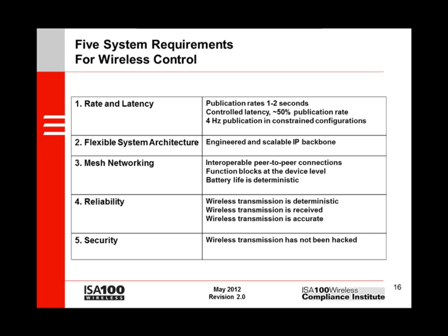The ISA-100 standard was designed to support reporting rates of four times per second, or possibly more, in meticulously engineered installations. Second, if your network can't be architected for the performance you need, the rest of this list doesn't matter. The designers of ISA-100 believe that whenever control is involved, the network needs to be carefully engineered as an extension of a mature and scalable IP backbone. This bias is clear in the standard, and it's also clear in ISA-100 products. Third, true mesh networking is a practical requirement for controls. For time-critical control applications, it might not be acceptable to wait for a message to travel all the way to a controller and then all the way back again wirelessly. For those network configurations, control needs to involve a simple and direct wireless connection between devices. These connections need to keep running even if the mesh network operation is temporarily interrupted.